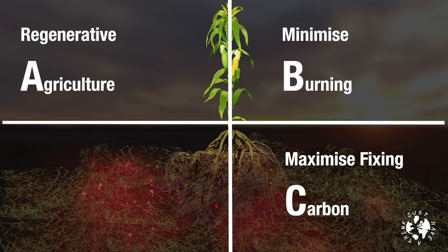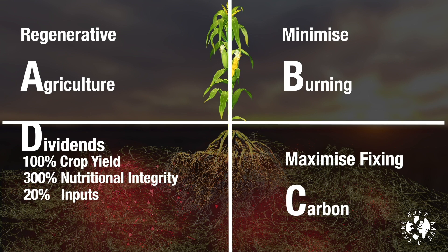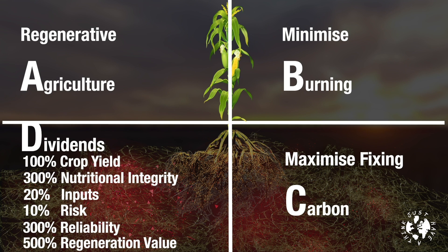It's an industrial system that is completely unsustainable and rapidly destroying vast tracts of otherwise fertile land and forestry area. In stark contrast, the approximately 1,000 Australian farmers currently participating in the Healthy Soil Australia program are reportedly achieving 100% of the crop yield with 300% the quality and nutritional integrity of food grains, less than 20% of the inputs, less than 10% of the risk, 300% the reliability, and 500% the natural land capital and soil regeneration value.